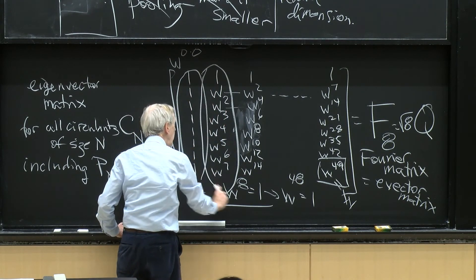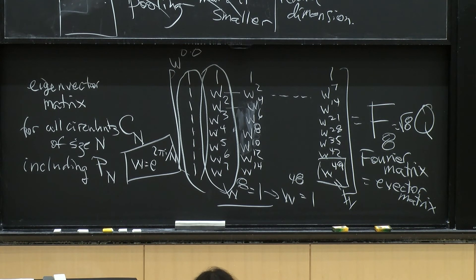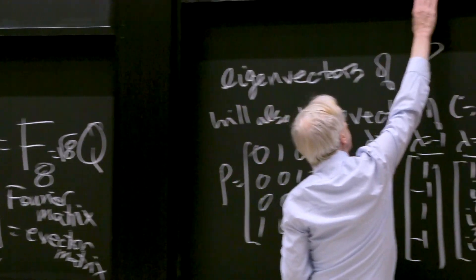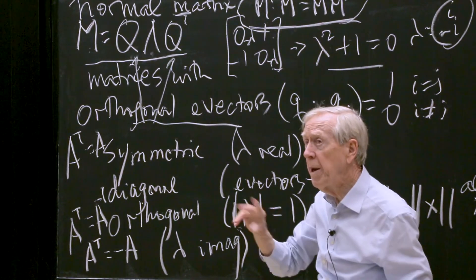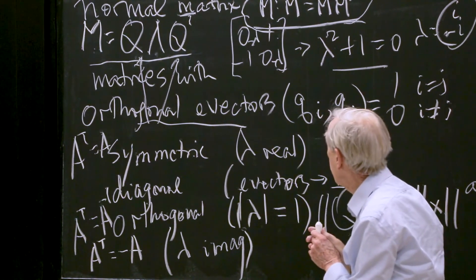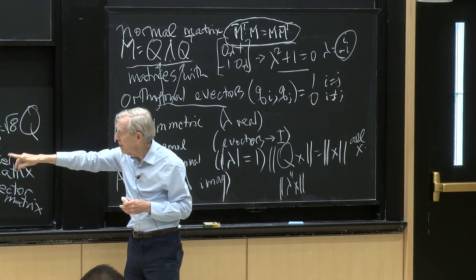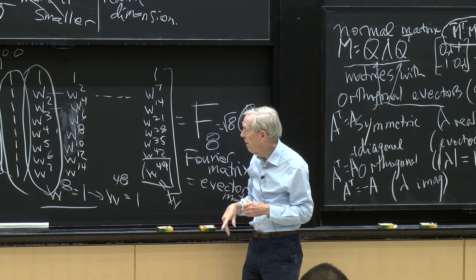This Fourier matrix has orthogonal columns, but not orthonormal columns. What's the length of that column vector? Square root of 8 — I add up 1² eight times and take the square root. So this is really √8 times an orthogonal matrix. We divide out the √8 to make the columns orthonormal instead of just orthogonal. Why do I know those columns are orthogonal? Because the permutation P satisfies P^T P = P P^T, so it's a normal matrix, and normal matrices have orthogonal eigenvectors.